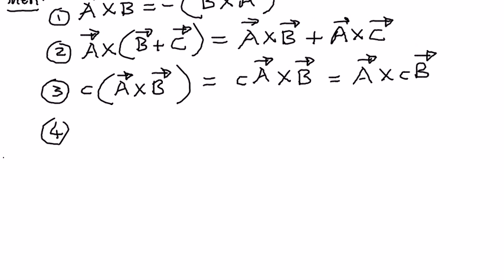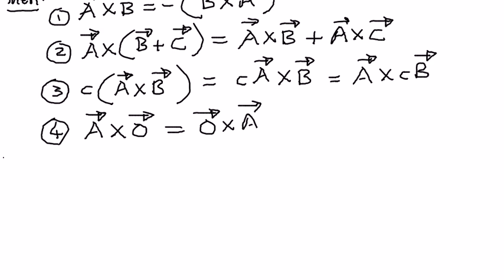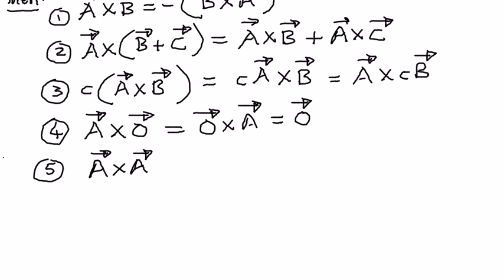The fourth property is: if we have vector A and cross it with a zero vector, or if we have a zero vector and cross it with vector A, the resulting vector is going to be a zero vector. Additionally, if we take a vector and cross it by itself — the same vector with the same components — the resulting vector is also going to be a zero vector.